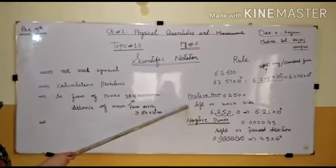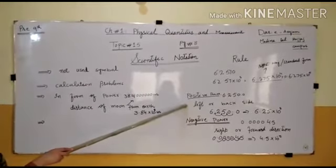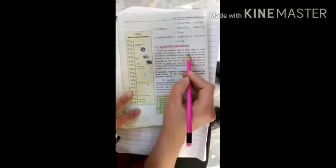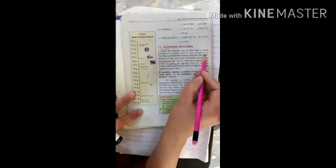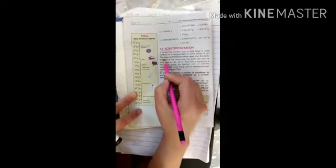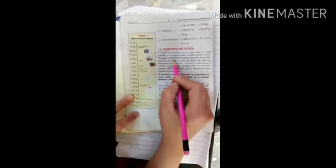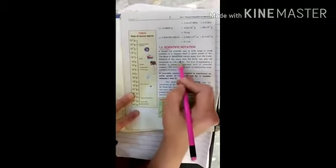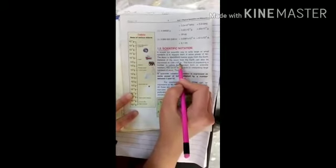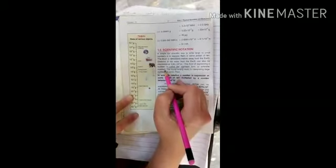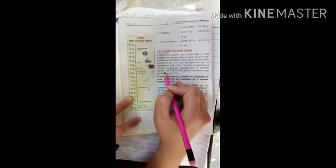The scientific notation is a simple but scientific way to write a large or small number, to express them in some power of 10. The moon is 384,000,000 meters away from the earth. Distance of the moon from earth can also be expressed in this form. The form of expressing a number is called the standard form and scientific notation. We call it scientific notation or we call it standard form.